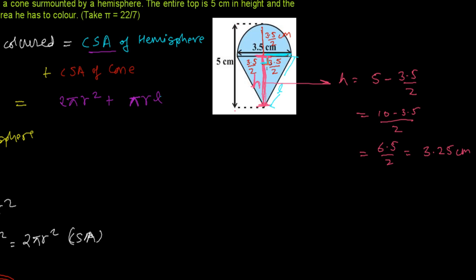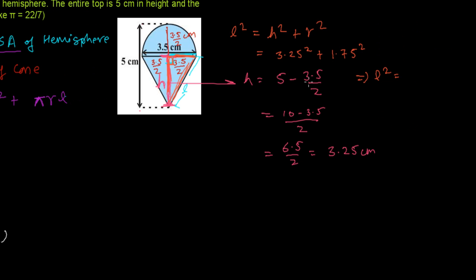This forms a right-angle triangle. By the Pythagorean theorem, l² = h² + r². So l² = 3.25² + 1.75². From the calculator: 3.25² = 10.5625 and 1.75² = 3.0625, giving l² = 13.625. Taking the square root of 13.625 from the calculator gives l ≈ 3.69 cm. If you'd like to learn how to find square roots manually, please comment below and I'll make another video.